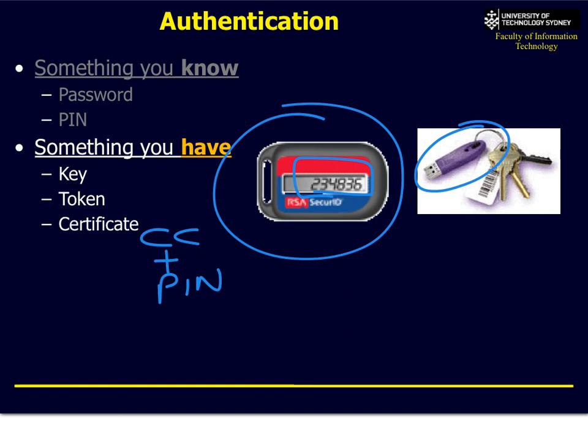Another one that's becoming very popular is SMS. If you log on to Gmail, you can set up two-factor authentication. When you log in for the first time on that browser, it'll send an SMS with a magic code to your telephone. On your phone you'll get a number like G1234. You type it into the website and it lets you in. Much more secure — you can't receive that in Nigeria if your phone is here in Sydney.